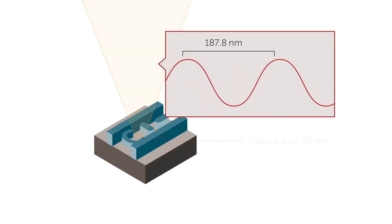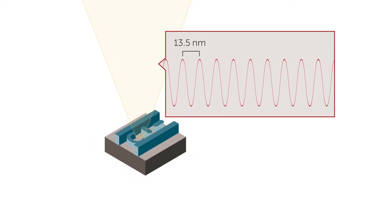EUV uses light with a wavelength of only 13.5 nanometers. This enables finer circuit patterns and feature sizes well below 10 nanometers.